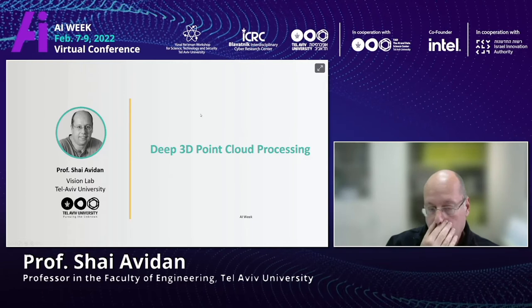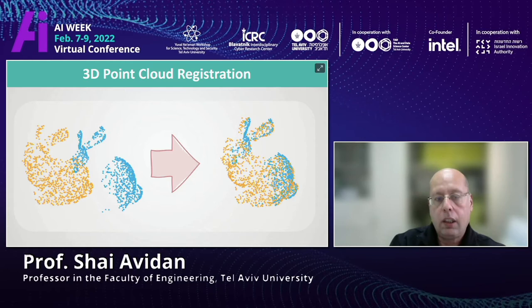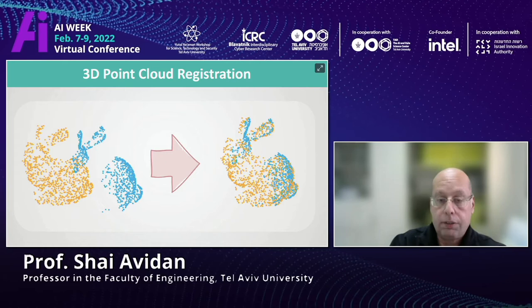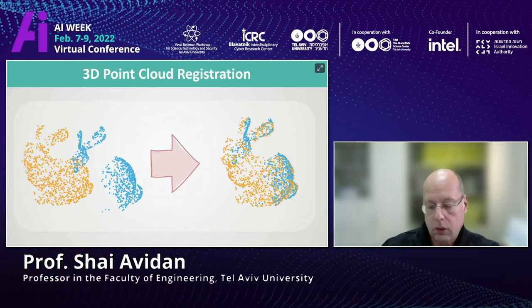The task is to take two point clouds, like the one you see on the left, and find the transformation that aligns them perfectly as you see on the right. And the first question to ask is: why bother, who needs this?